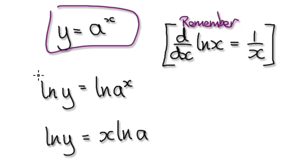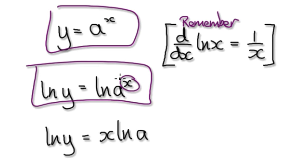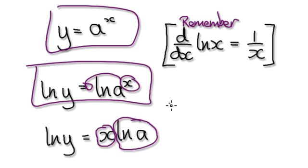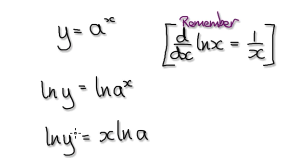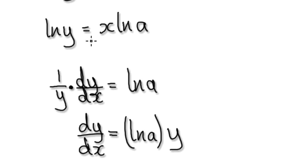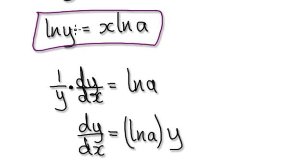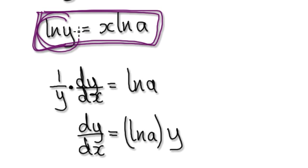So starting with y equals a to the power of x: take the natural log of both sides, then apply the log power rule to bring x out front, giving you ln(y) equals x times ln(a). Now use implicit differentiation, remembering that y is a function of x, which means you've got to use the chain rule.